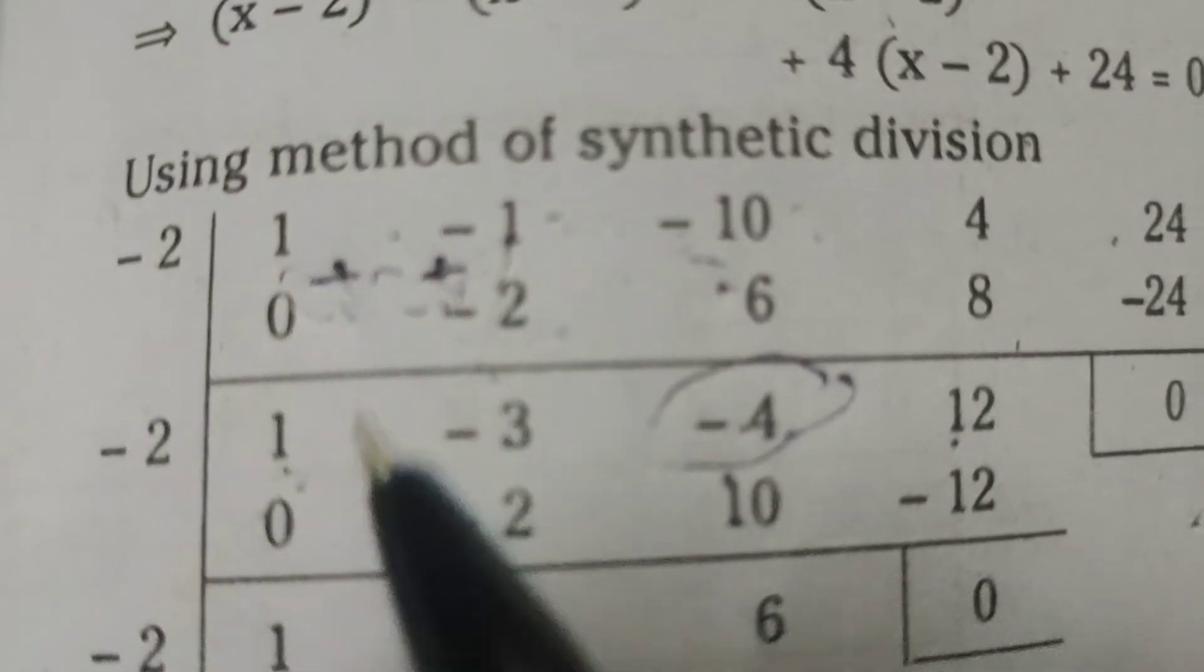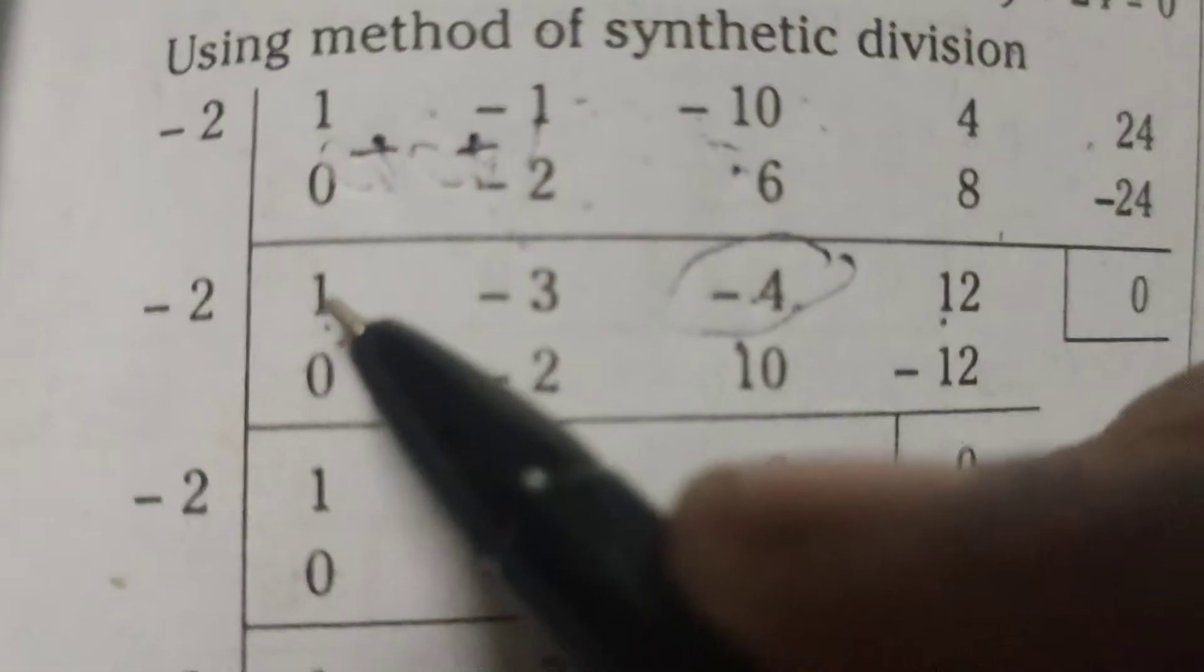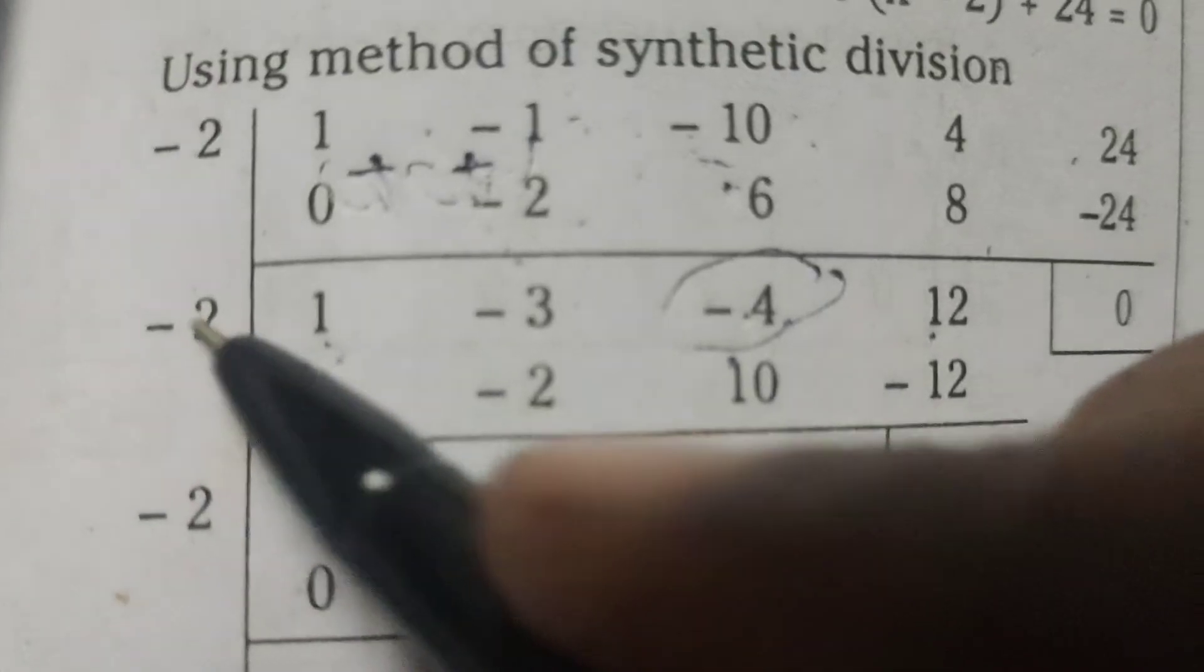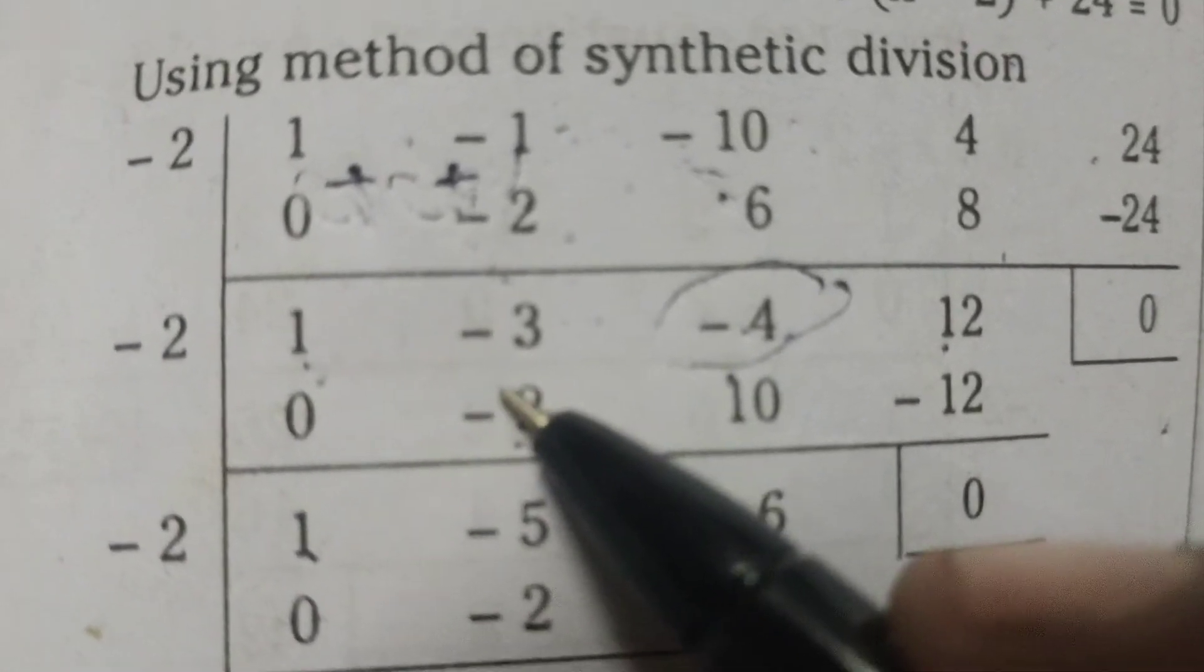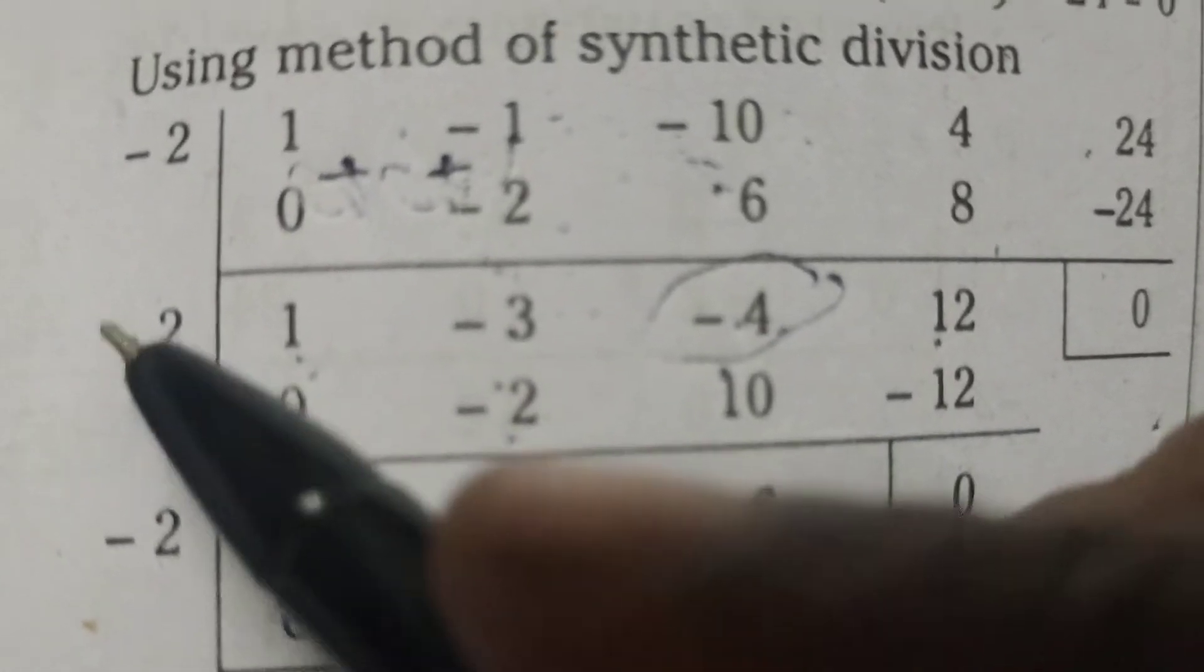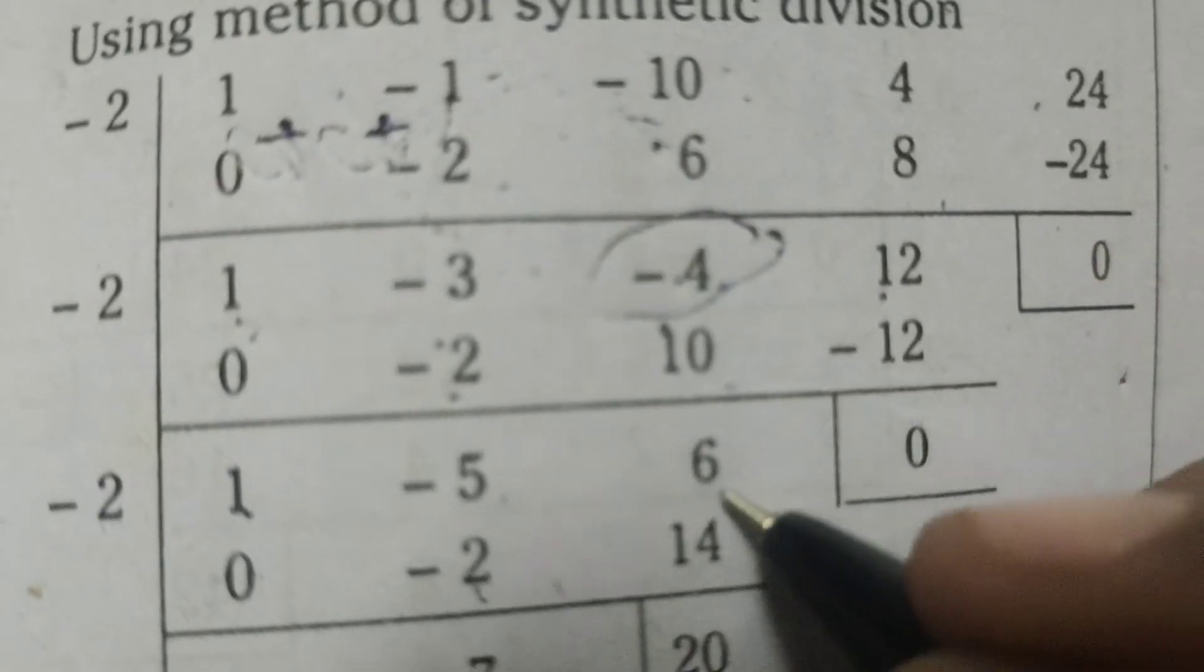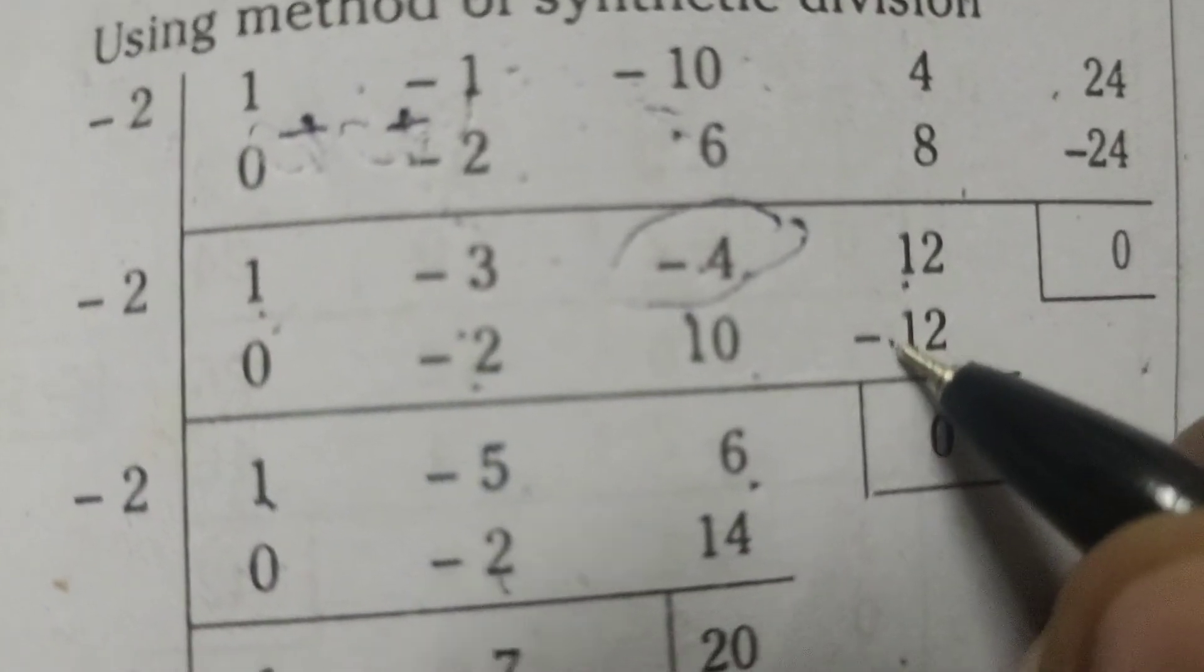Here again, 0, 1 plus 0, 1, 1 into -2, -2, -3, here plus 0, -2, -5. -5 into -2 means plus 10, -4 plus 10 means 6. 6 into -2, -12, plus 12, -12, 0.